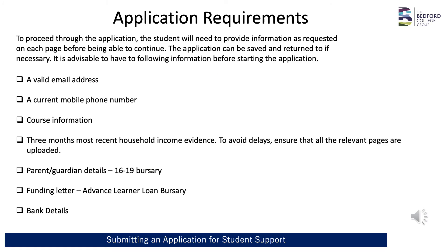Before you start your application, it is advisable to have the following information ready: a valid email address, a current mobile phone number, your course information, and three months of the most recent household income evidence such as payslips. To avoid delays, ensure all relevant pages are uploaded. Parent or guardian details will be needed if applying for the 16 to 19 bursary, and a funding letter is required if applying for the advanced learner loan bursary. You will also need to provide bank details — either the parent or guardian's or the student's. The application can be saved and returned to if necessary.